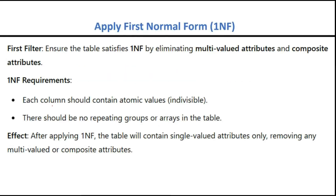First Normal Form is the first filter. Your data has some dirtiness, inconsistency, redundancy, and anomalies — a lot of things are there with your table. You apply this filter and when the table passes through it, some of the things are removed, though not everything — this is only the first-level filter. Not all problems will be removed at this stage. There are two requirements for 1NF.